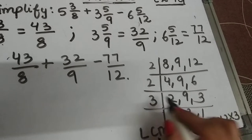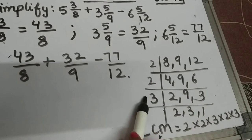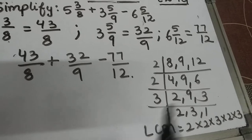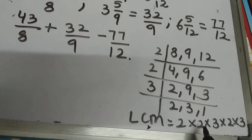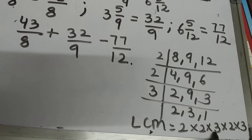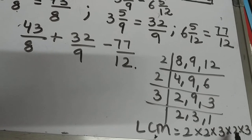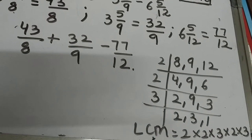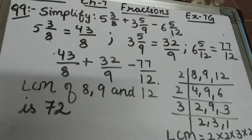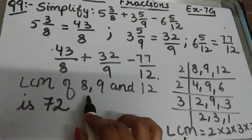2×2=4, 4×3=12, 12×2=24, and 24×3=72. So LCM of 8, 9, and 12 is 72.